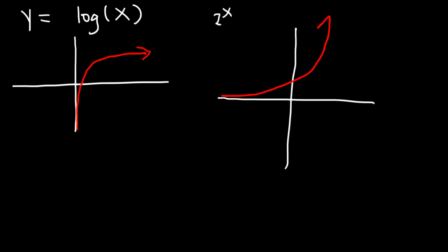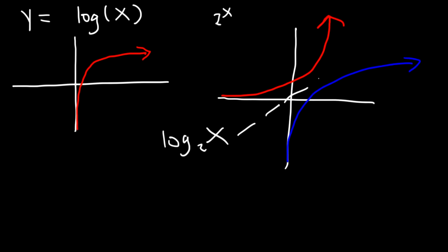This is the basic curve of 2 to the x. And the graph of log base 2 of x looks like this — I'm going to highlight it in blue. These two functions are inverse functions. An inverse function reflects across the line y equals x with its counterpart. So if this is f, this is the inverse of f. They reflect about the line y equals x.